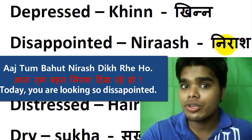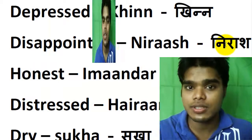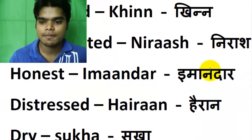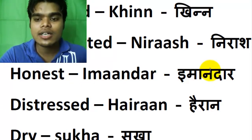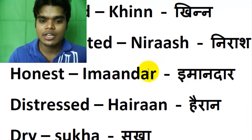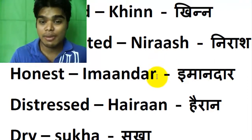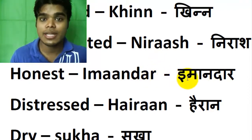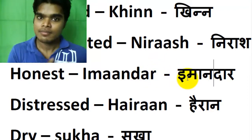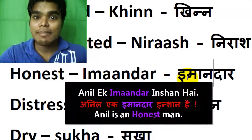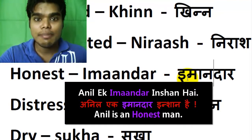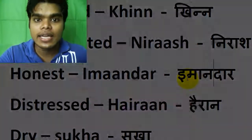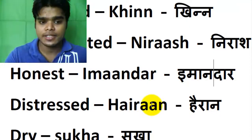Today you are looking so much disappointed. The next word is 'Imaandar,' meaning honest. For example: 'Anil ek Imaandar insan hai' — Anil is an honest person. The next word is 'Hairan,' meaning distressed.